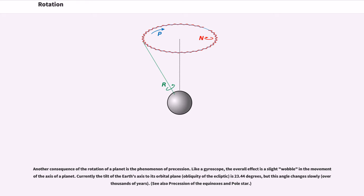Another consequence of the rotation of a planet is the phenomenon of precession. Like a gyroscope, the overall effect is a slight wobble in the movement of the axis of a planet. Currently the tilt of the Earth's axis to its orbital plane is 23.44 degrees, but this angle changes slowly.